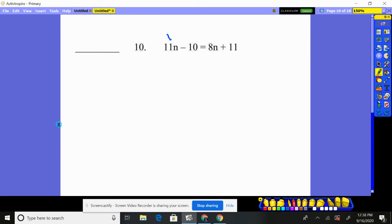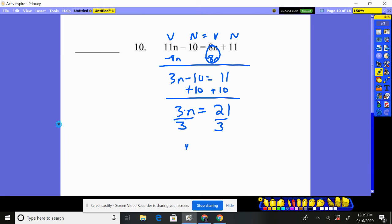Number 10, variable minus the number equals variable plus the number. 11n, 8n. Who am I going to move first? I'm going to move the 8n. So I'm going to subtract 8n from both sides of the equation. That gives me 3n minus 10 equals, that goes away, 0 plus 11 is 11. I now move my number over to both sides. I get 3n is equal to 21. How do I undo multiplying by 3? We divide by 3, and n is equal to 7.